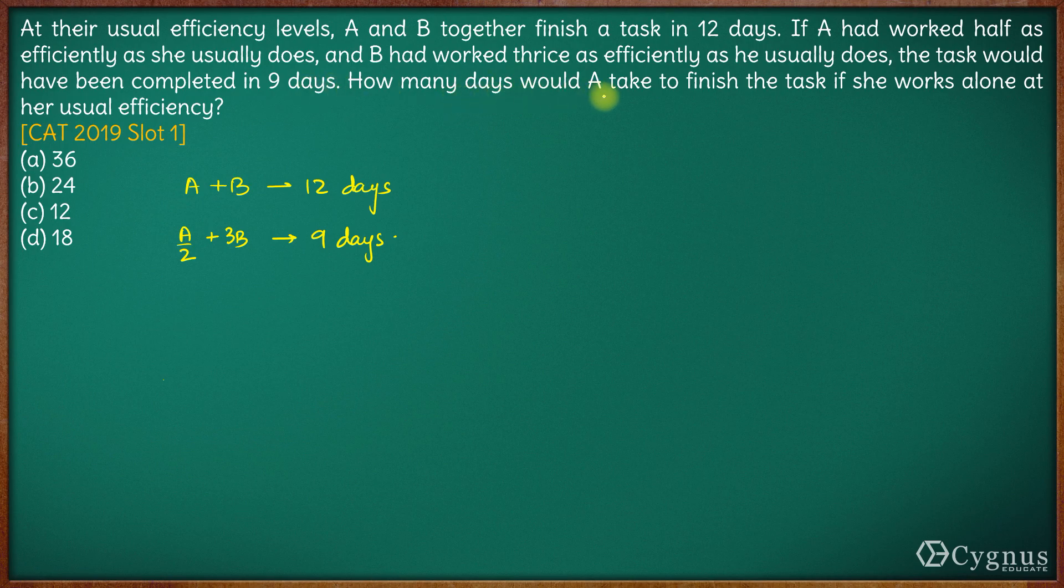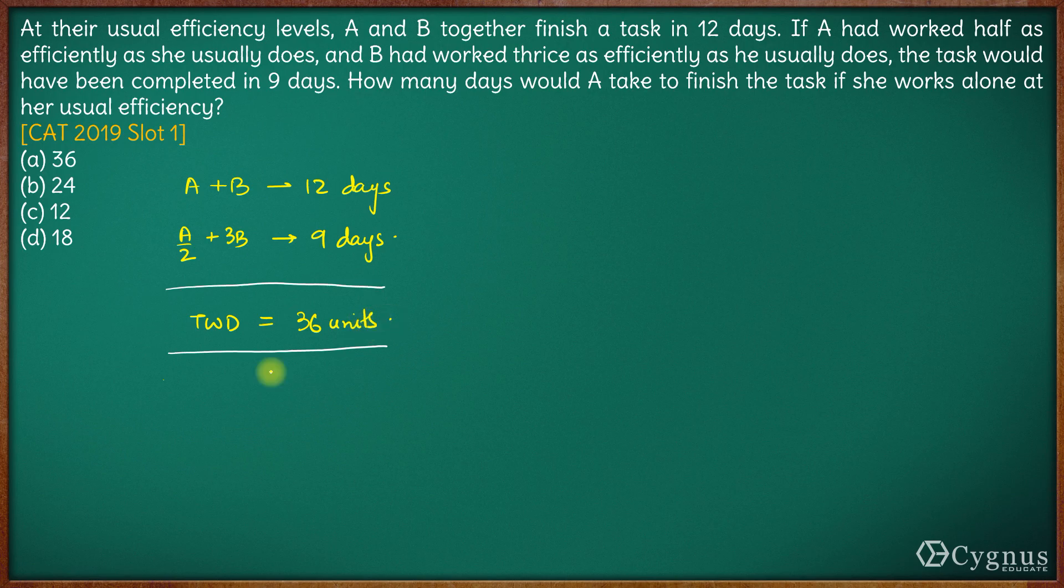How many days would A take to finish the task if she works alone at her usual efficiency? So let us take total work to be done as LCM of 12 and 9 which is 36 units. This is the total work.